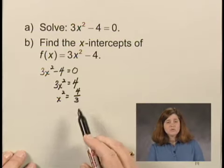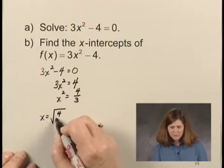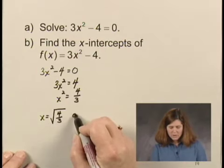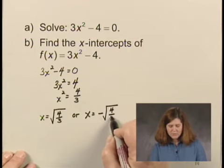If x² = 4/3, then x must equal the square root of 4/3, or x must equal the opposite of the square root of 4/3.